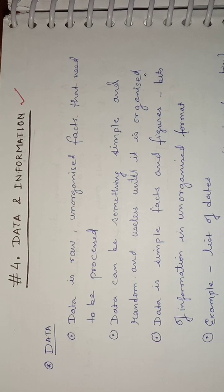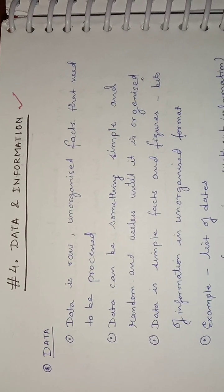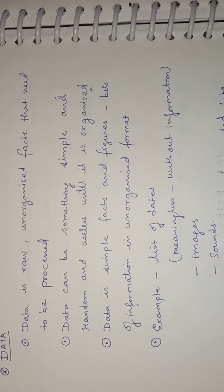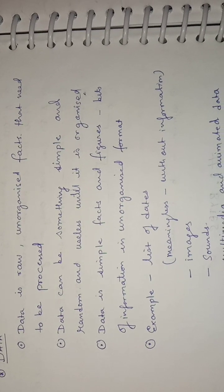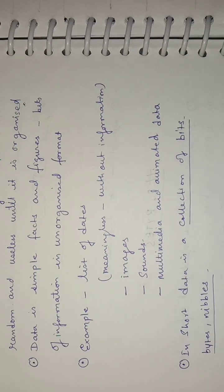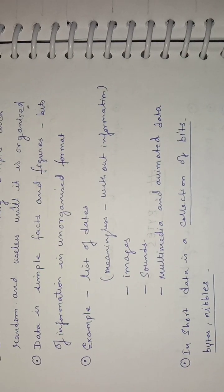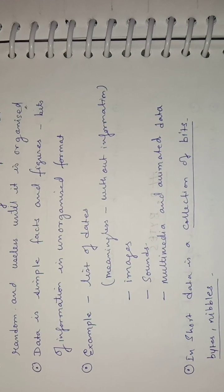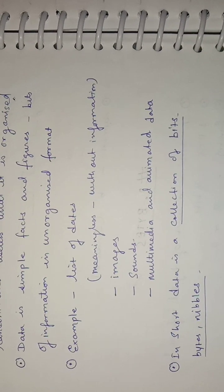Today we are going to see the topic data and information. Data is a raw, unorganized fact that needs to be processed. Data can be something simple, random, and useless until it is organized. Data is simple facts and figures, bits of information in an unorganized format. Examples of data include a list of dates, which is meaningless without context, images that don't make sense on their own, and sounds like the roaring of a lion — these don't make sense unless you state what they are. So these are examples of data.